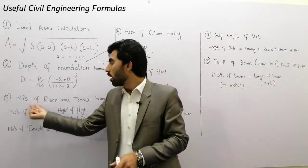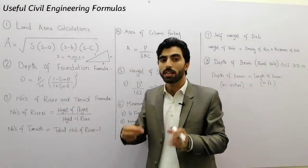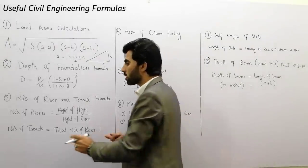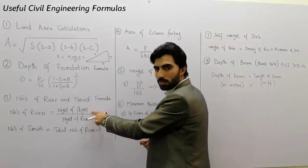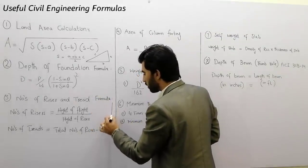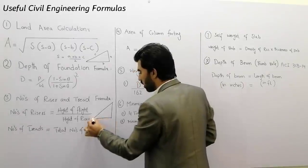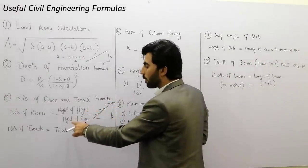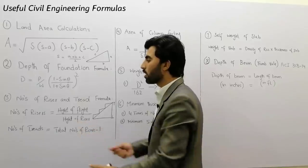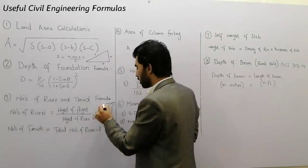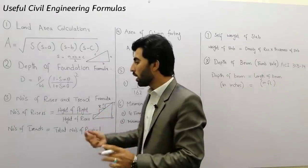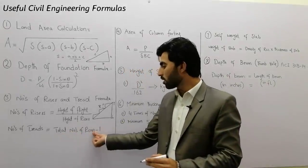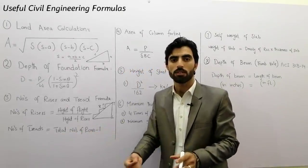The third formula is about the number of risers and treads in a staircase. If you want to find the number of risers: number of risers is equal to height of flight divided by height of riser, which gives us the total number of risers. If you need to find the number of treads, the number of treads is equal to the total number of risers minus 1.